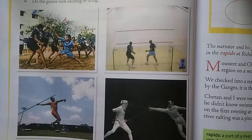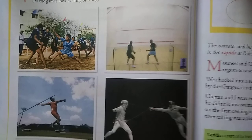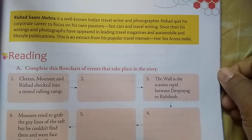The third picture is of javelin throw, a field game where players run with speed to a designated spot and throw the spear or javelin to measure distance. The fourth picture is fencing, where players hit their opponents with the points of swords. The aim of the game is to hit the opponent on the target without getting hit.